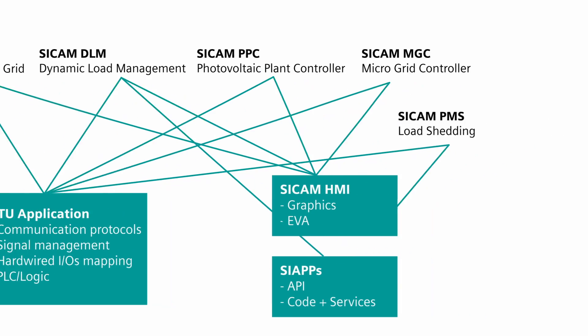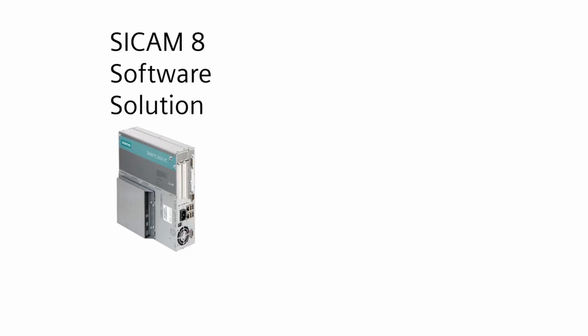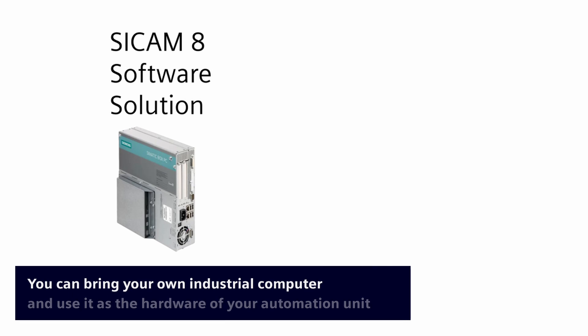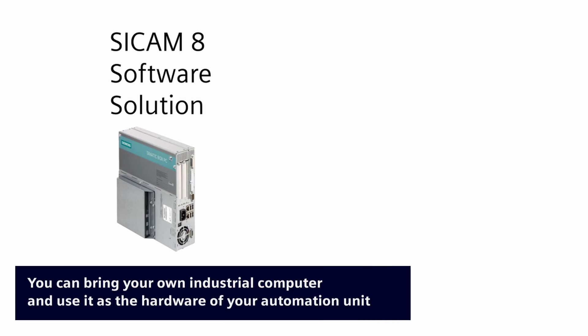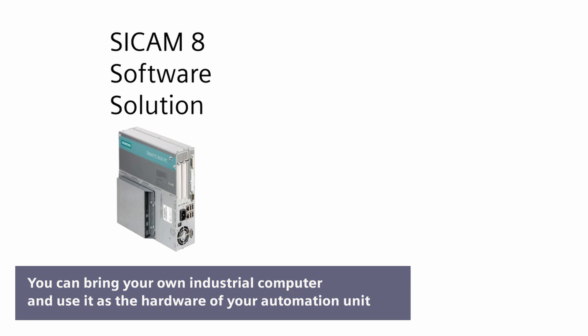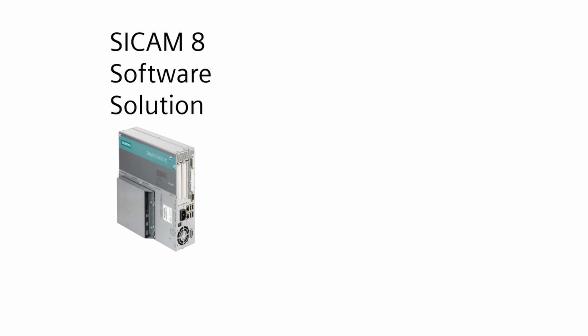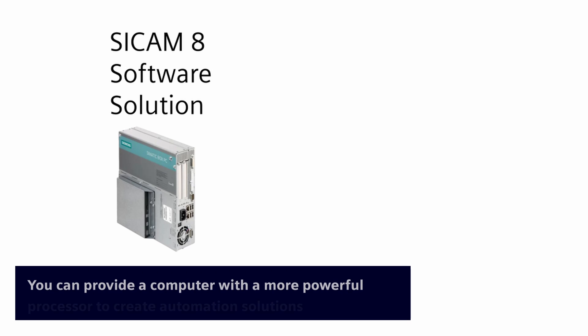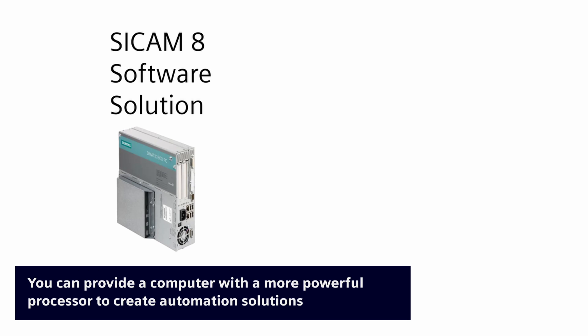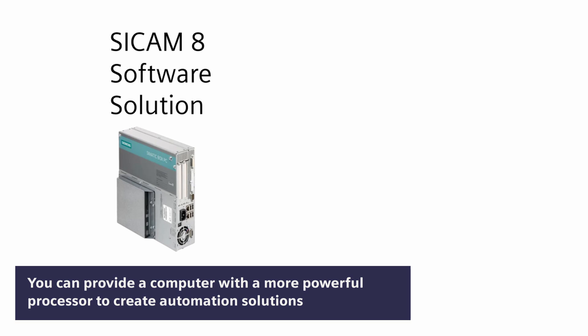Now let's see what the new CCAM8 software solution provides. With this new product you can bring your own industrial computer and use it as the hardware of your automation unit. You are no longer limited to the computation resources available on a CCAM8000 CPU. Instead, you can provide a computer with a more powerful processor to create automation solutions for even larger systems.